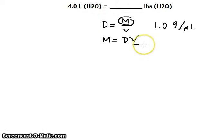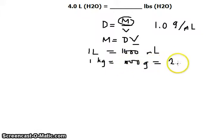We will be using that in our solution. Another conversion factor is that 1 liter is equivalent to 1,000 milliliters. And another conversion factor we need is that 1 kilogram is 1,000 grams, and 1 kilogram is also equivalent to 2.2 pounds.